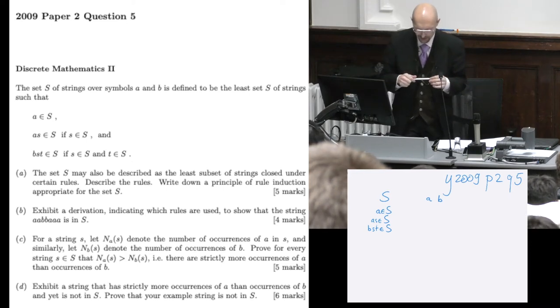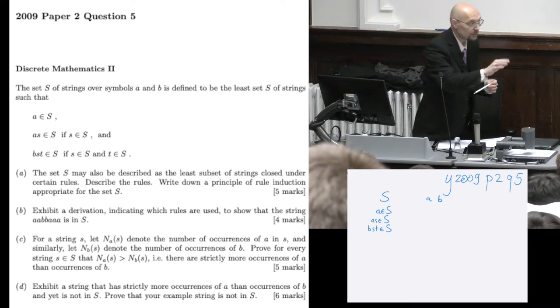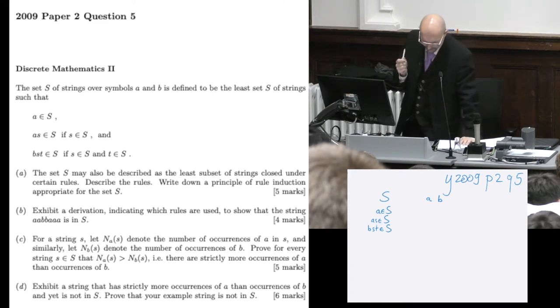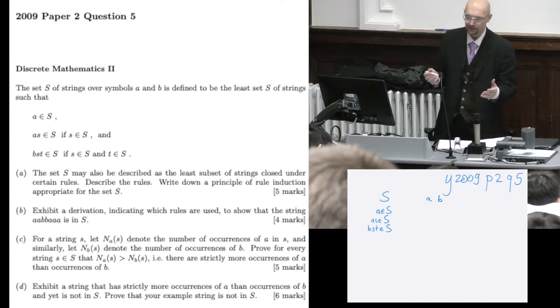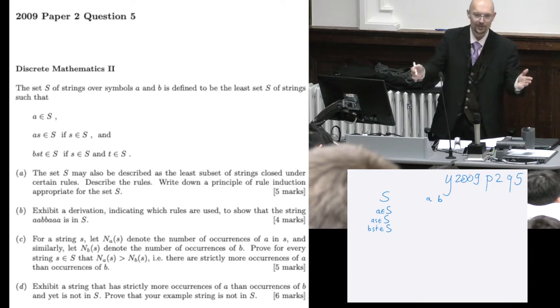Then, sub-question A for five marks. Who wants five marks? The set S may also be described as the least subset of strings closed under certain rules. Describe the rules. Write down a principle of rule induction appropriate for the set S. You can do that with your eyes closed now, right?